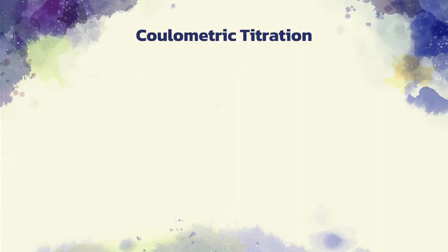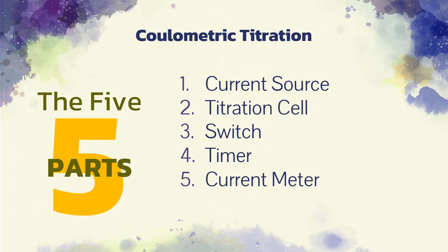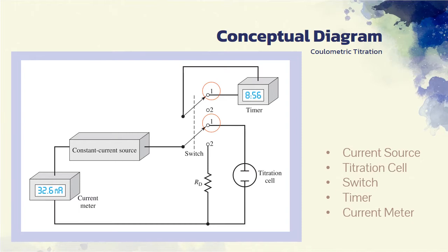Now, let's go over to controlled current coulometry, or coulometric titration. The equipment required for a coulometric titration includes a source of constant current from 1 to several 100 mA, a titration cell, a switch, a timer, and a device for monitoring current. As shown in the figure, moving the switch to position 1 simultaneously starts the timer and initiates a current in the titration cell. When the switch is moved to position 2, the electrolysis and the timing are discontinued. With the switch in this position, however, current continues to be drawn from the source and passes through a dummy resistor that has about the same electrical resistance as the cell. This arrangement ensures continuous operation of the source, thus aiding in maintaining a constant current.